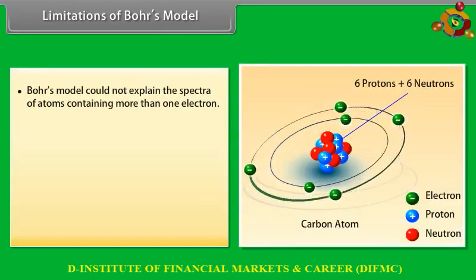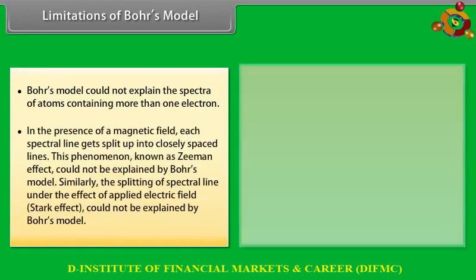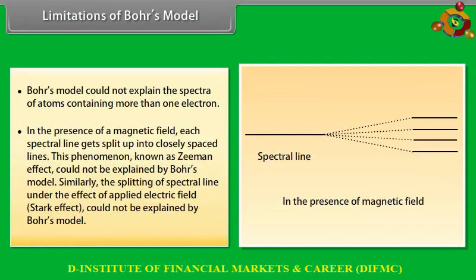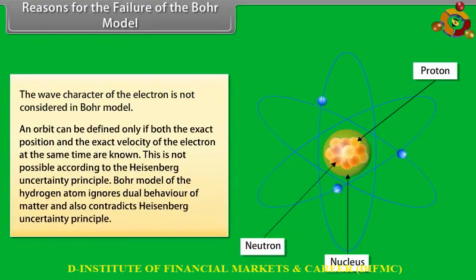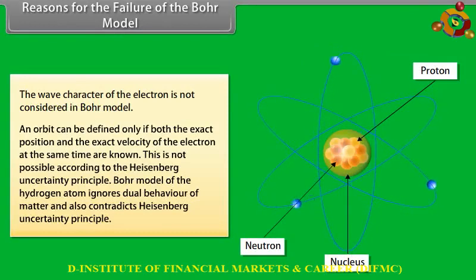Limitations of Bohr's model: (1) It could not explain the spectra of atoms containing more than one electron. (2) In a magnetic field, each spectral line splits into closely spaced lines — the Zeeman effect — which Bohr's model could not explain. Similarly, the splitting under an electric field — the Stark effect — could not be explained. (3) The wave character of the electron is not considered. An orbit requires knowing both exact position and velocity simultaneously, which is impossible according to the Heisenberg uncertainty principle. Bohr's model ignores the dual behavior of matter and contradicts Heisenberg's uncertainty principle.